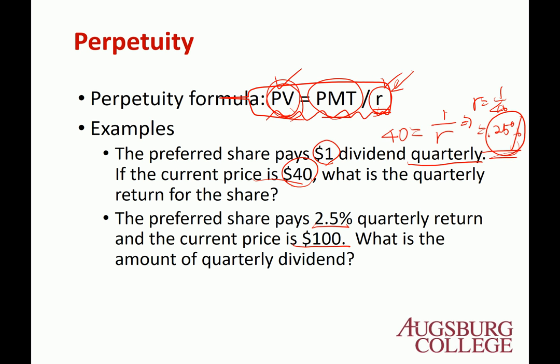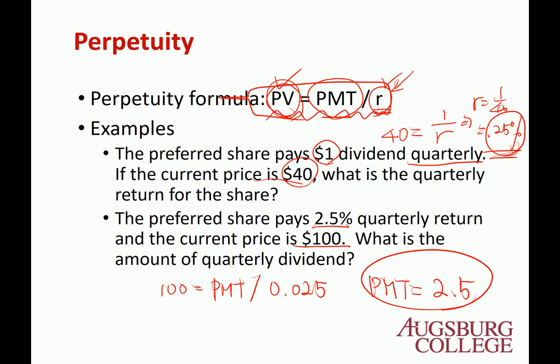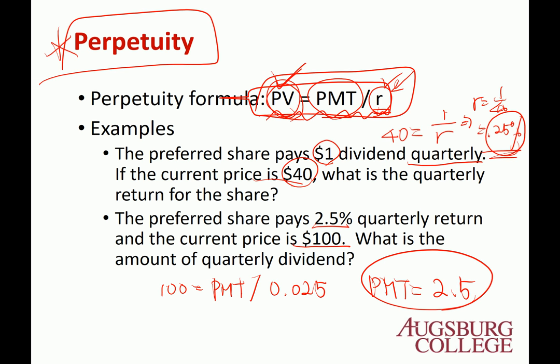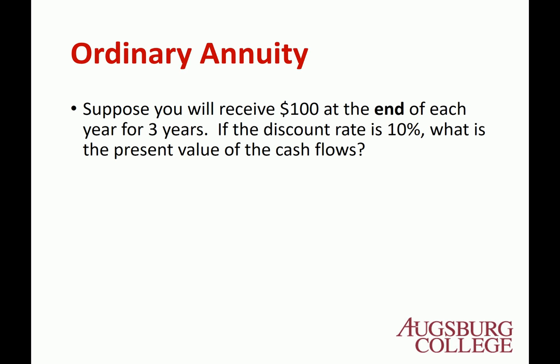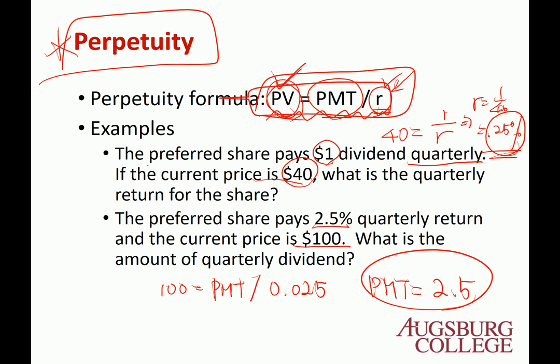Next example: a preferred share pays a 2.5% quarterly return and the current price is $100. What is the quarterly dividend? We have PV = 100 and R = 2.5% = 0.025. So 100 = PMT / 0.025, which gives PMT = $2.50 per quarter. The preferred stock is the typical example of perpetuity because it pays a fixed dividend and never matures.